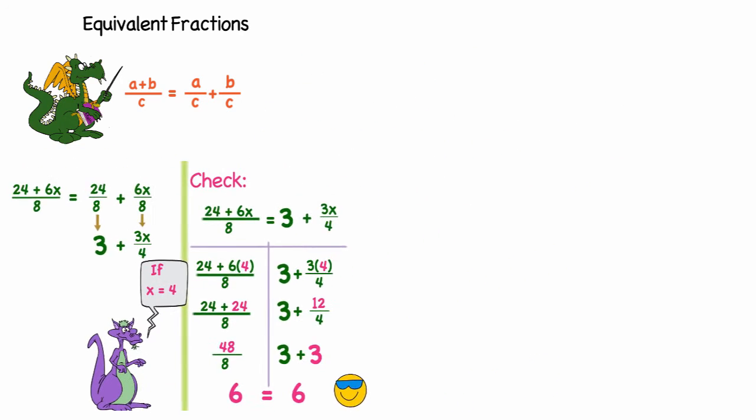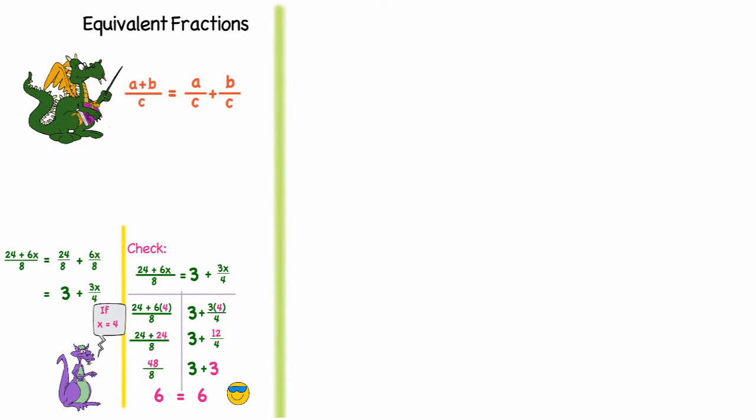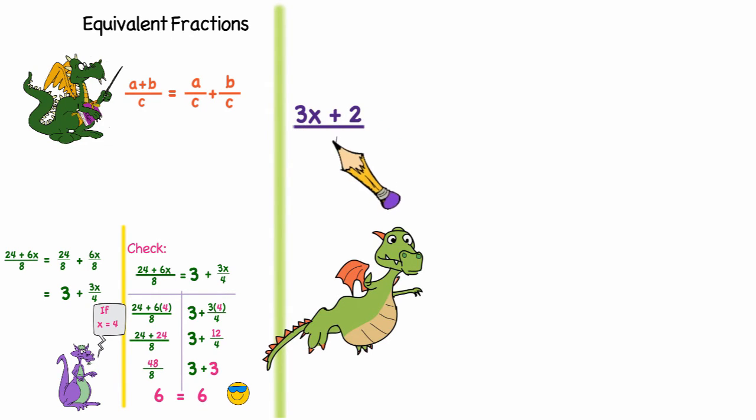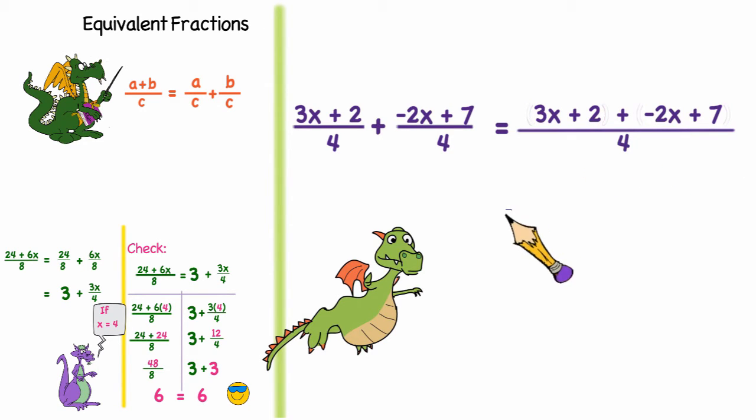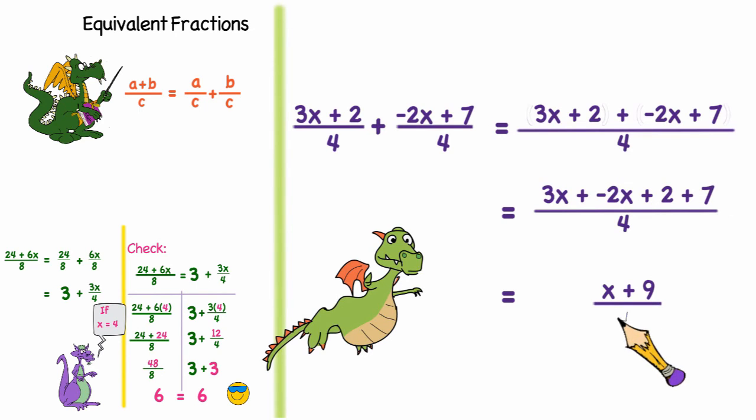Let's look at one more example. Let's say we have the expression 3x plus 2 over 4 plus negative 2x plus 7 over 4. Well that would be the same thing as saying 3x plus 2 plus negative 2x plus 7 over 4. Now I can combine my like terms and I get the simplified expression x plus 9 over 4.